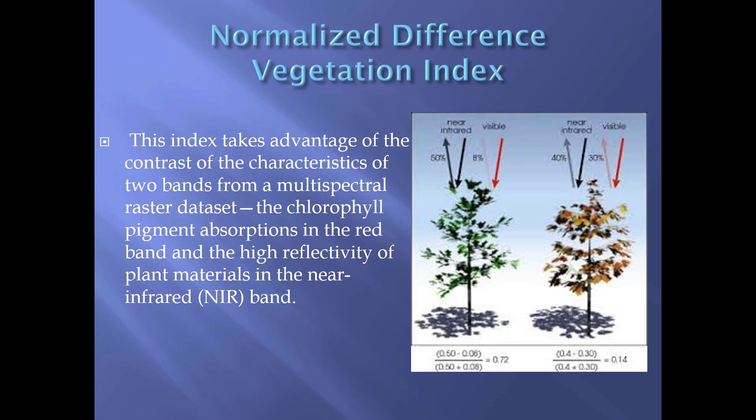An index varies from negative 1 to positive 1. The healthy plant has a value of 0.72 and the unhealthy plant has 0.14. An index does not have units — it is just a number.